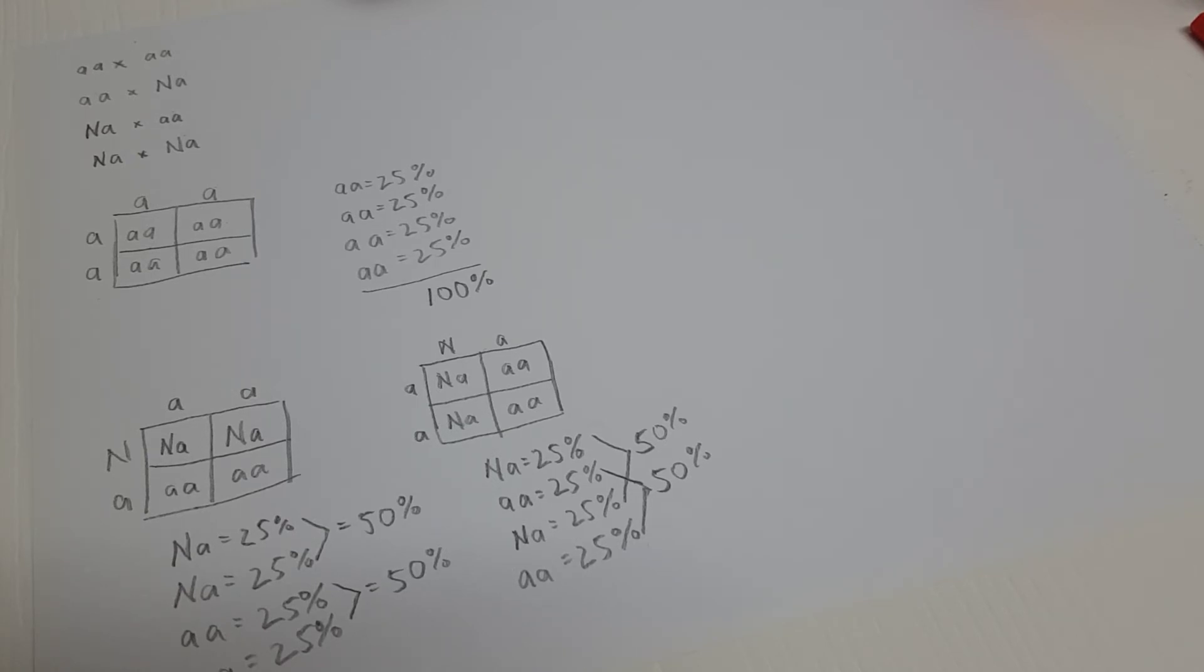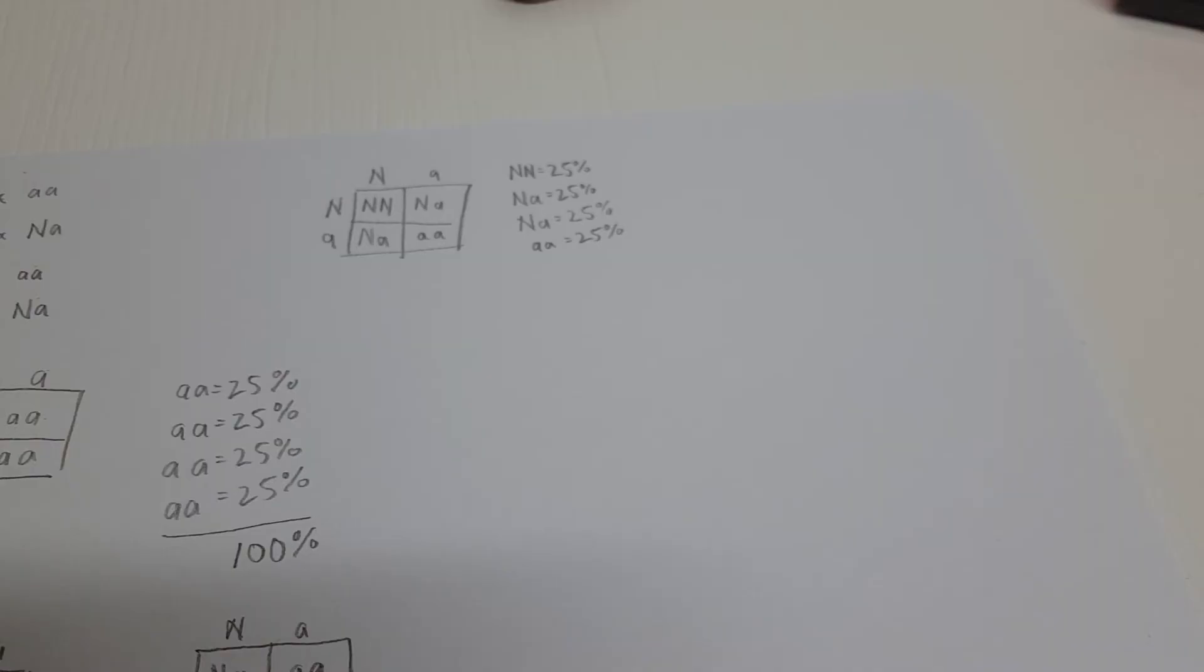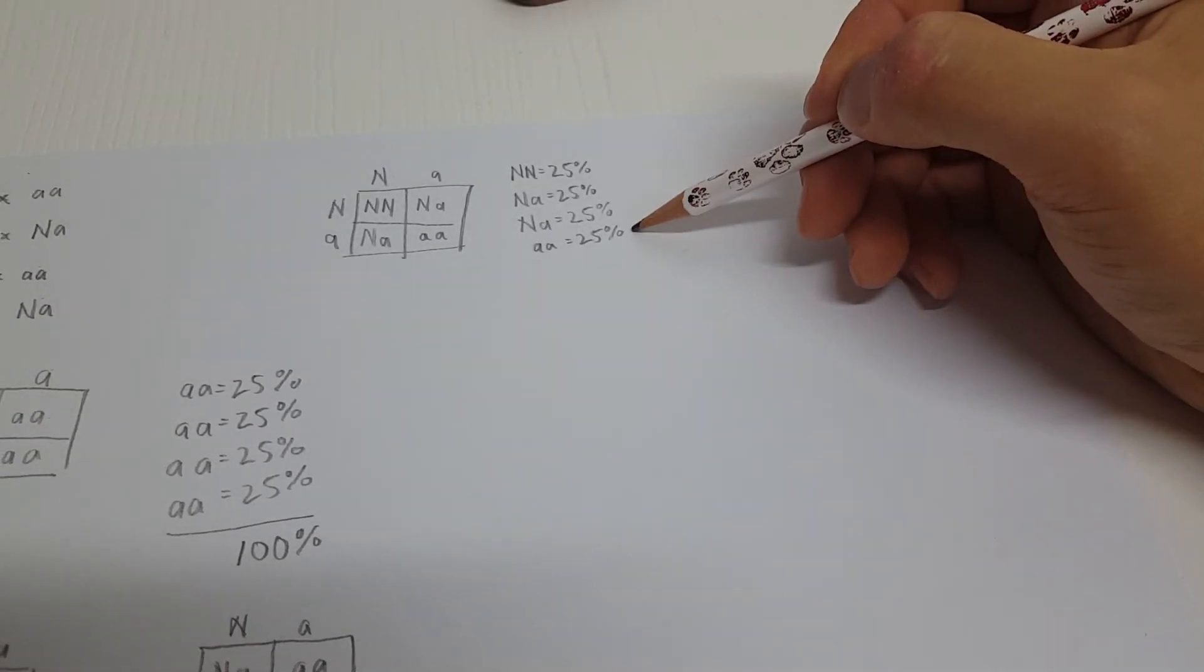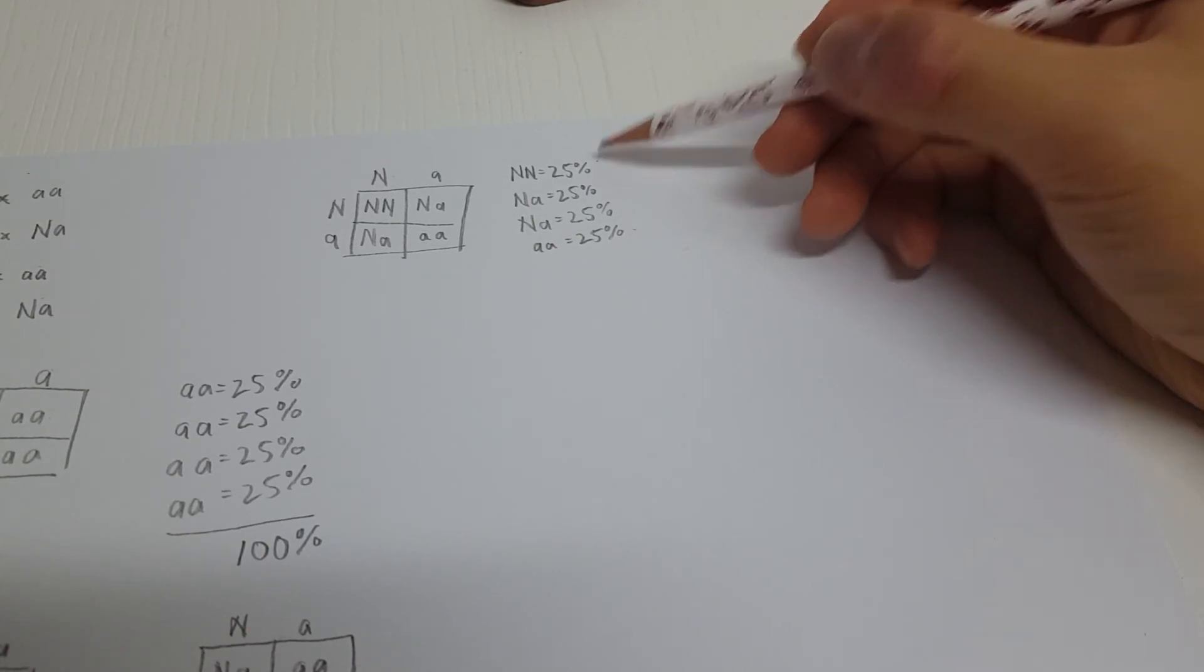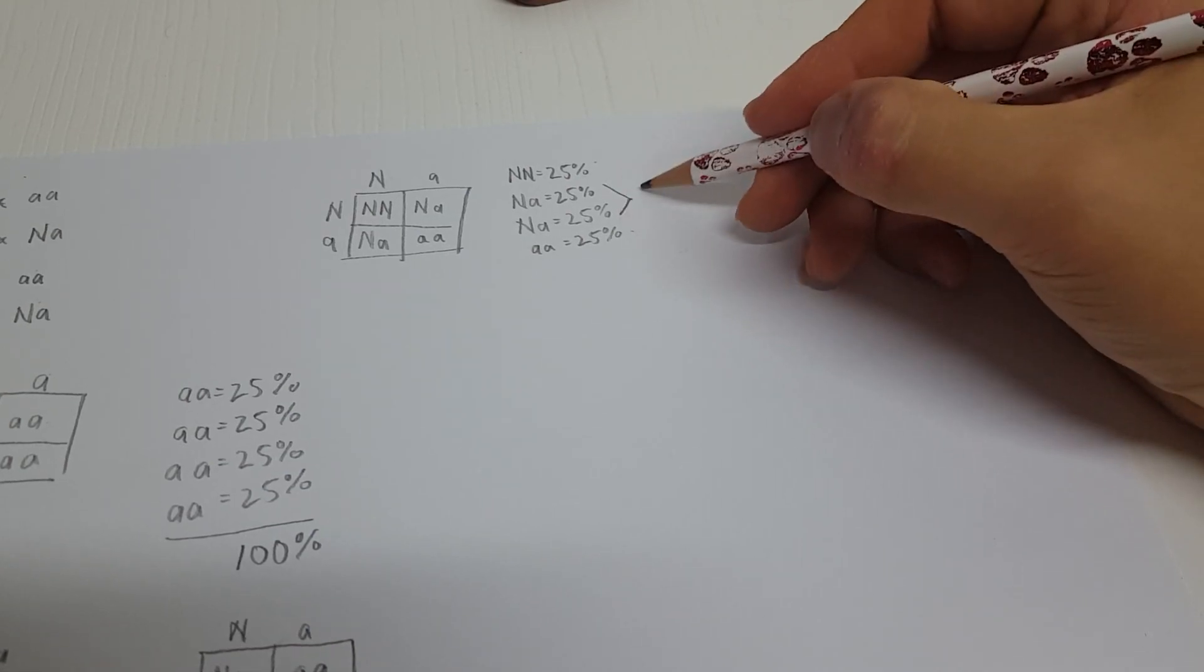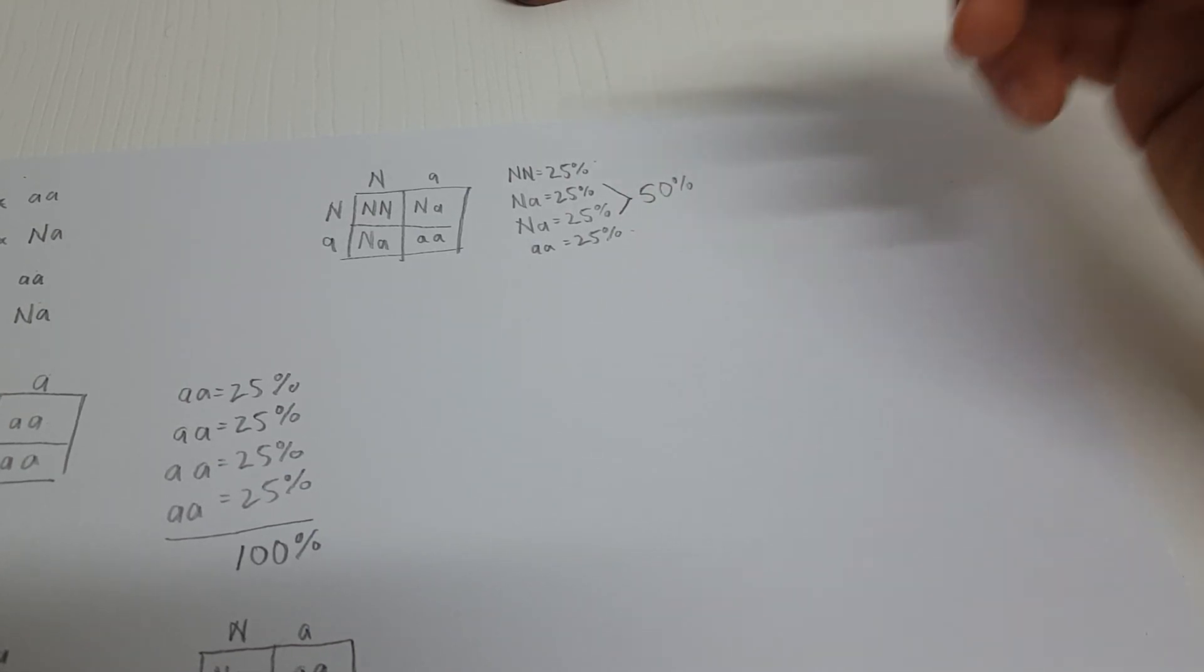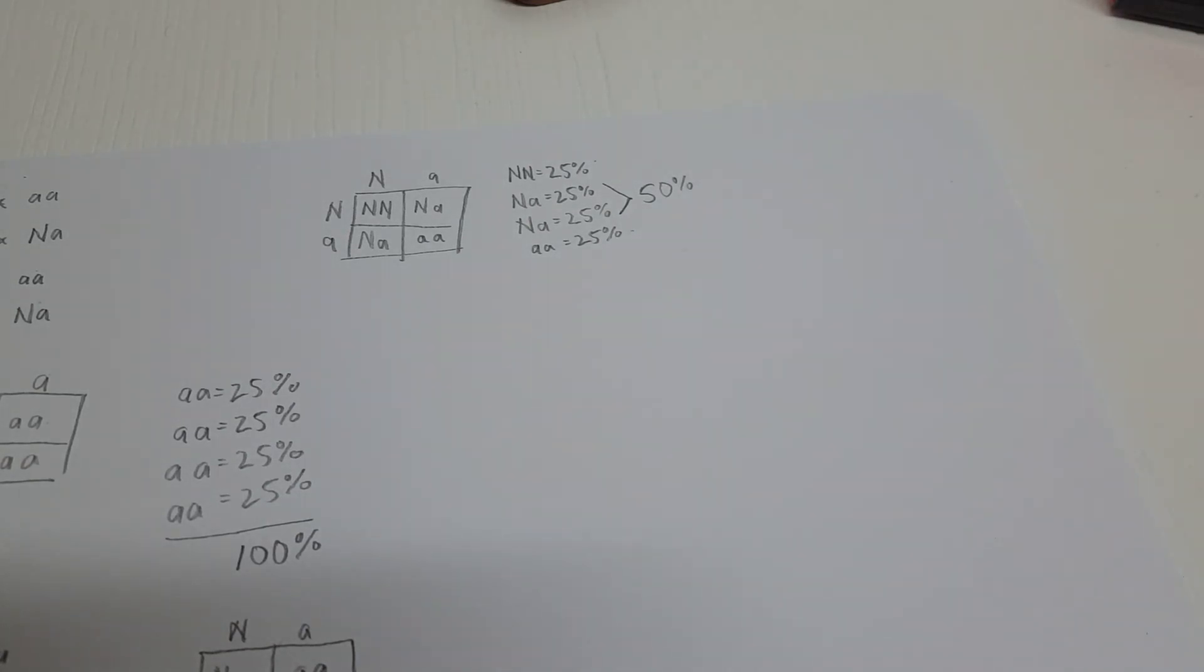The last case, we breed a het albino to a het albino. And as you can see, the chances of getting an albino is 25%. The chance of getting a completely normal animal is 25%. And the chance of getting het albinos is 50%. That means out of a clutch of four babies, the odds of getting an albino is 1 in 4. The other three will look normal and you will have no idea which of those normals carry the albino gene.